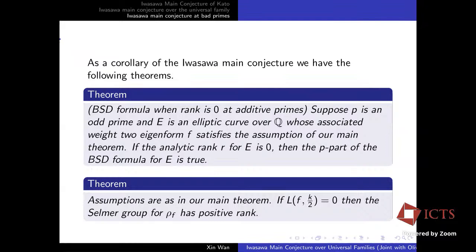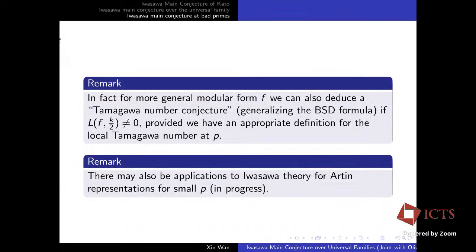More precisely: if the assumptions of the previous theorem hold for ρ̄_F, then Kato's Iwasawa main conjecture for F is true. As a consequence, we have a BSD formula in rank zero at additive primes: if p is an odd prime and E is an elliptic curve over Q whose associated weight-two cusp form satisfies our assumptions, then if the analytic rank of E is zero, the p-part of the BSD conjecture for E is true. Another corollary: if the central L-value of F is zero, then the Selmer group for ρ_F has positive rank.